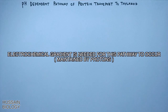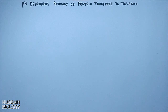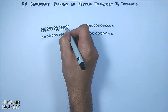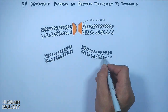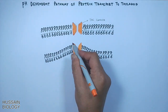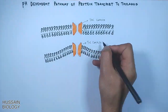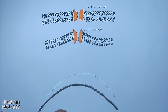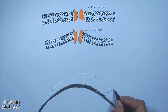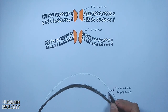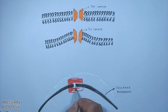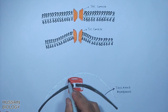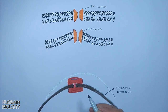Just like in the previous pathway, we have the same TIC and TOC complexes of the inner and outer membrane respectively, shown in the diagram. Then on the thylakoid membrane we have the translocon, which is composed of several proteins.